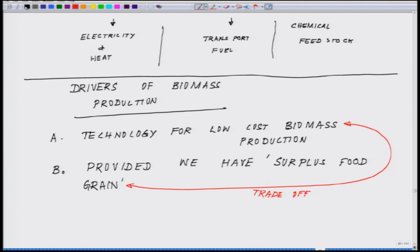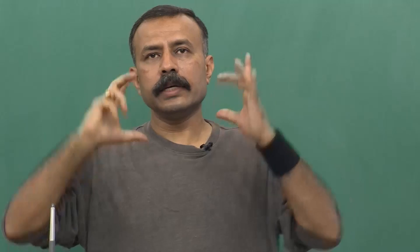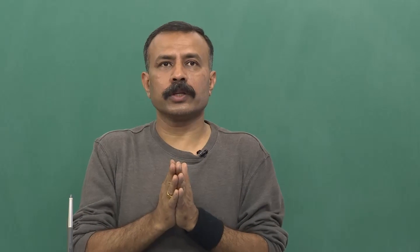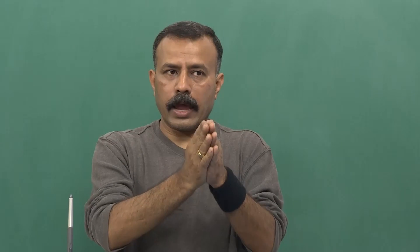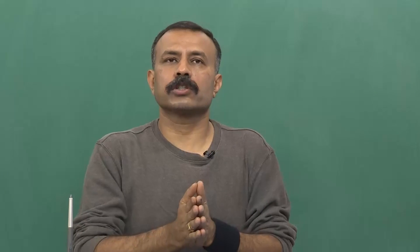Third in this line is the threat of greenhouse gases. There is a huge greenhouse problem — accumulation of a lot of CO2 because of many industrial processes. These three are the key driving forces in this direction, and at each point we have to make a conscious call.